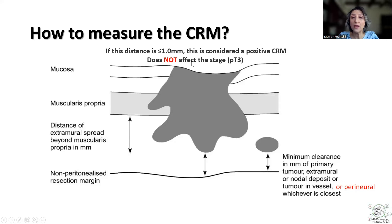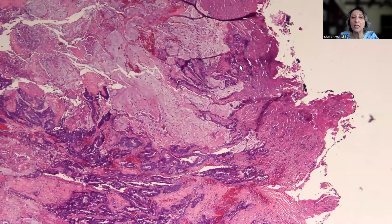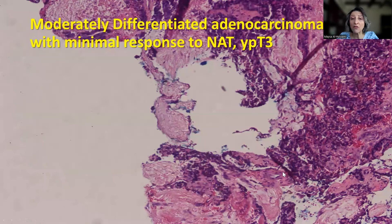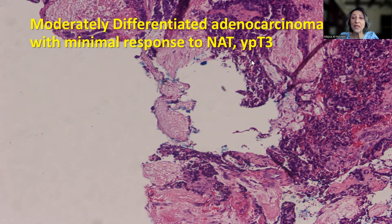Remember, a positive CRM does not affect the stage — it remains pT3. Here is a recently encountered case in my practice: there is a tumor that has involved the circumferential margin, and you can see the blue ink used to paint the margin — the tumor is actually involving it. We report this as moderately differentiated adenocarcinoma with minimal response to neoadjuvant therapy, because most of the tumor is viable, and the stage is ypT3.